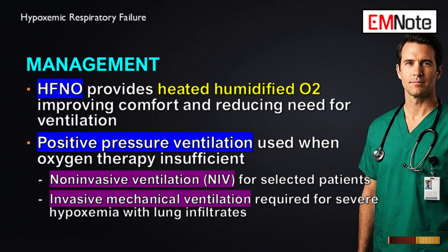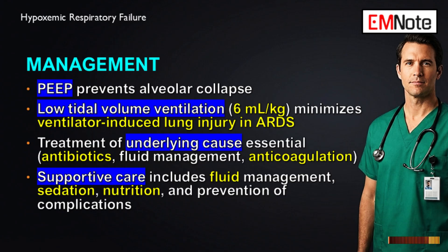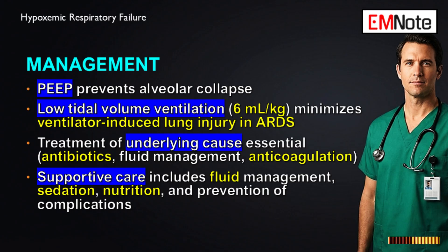PEEP — positive end-expiratory pressure — is our primary tool against shunt. It applies continuous pressure at the end of every breath to keep the alveoli from collapsing, stenting them open. This increases the lung's functional residual capacity, meaning more surface area for gas exchange, and directly counteracts the effect of shunt. However, it's a delicate balance: if PEEP is set too high, you can over-distend healthier parts of the lung, causing barotrauma and ventilator-induced lung injury. It can also compress vessels and drop blood pressure, so you have to titrate it very carefully.